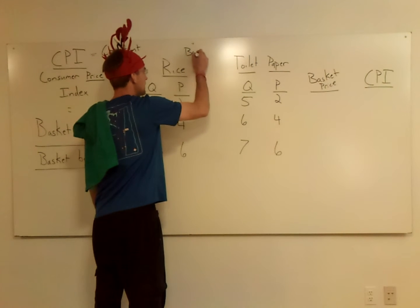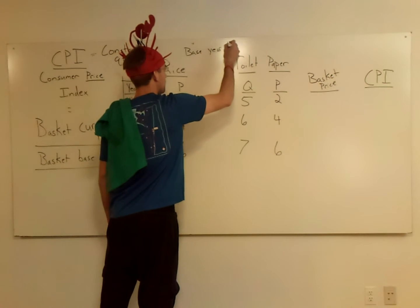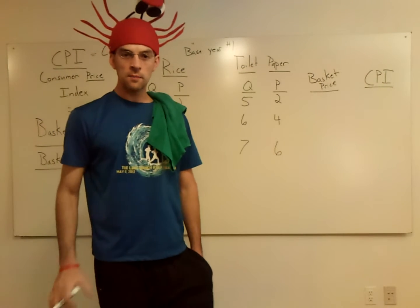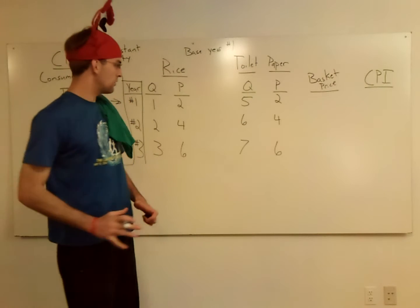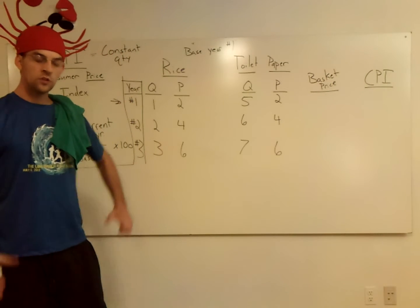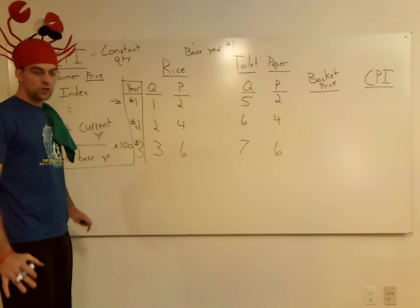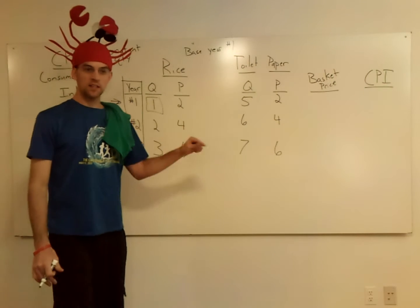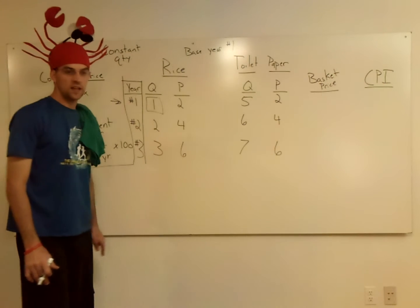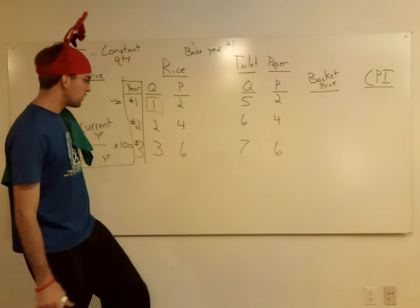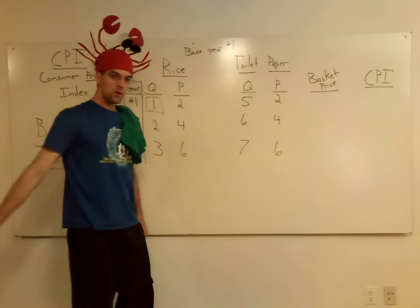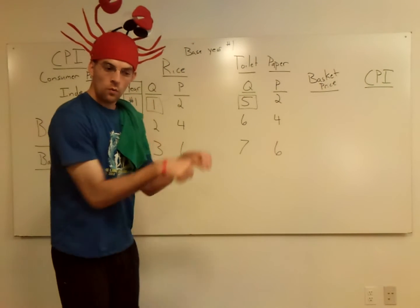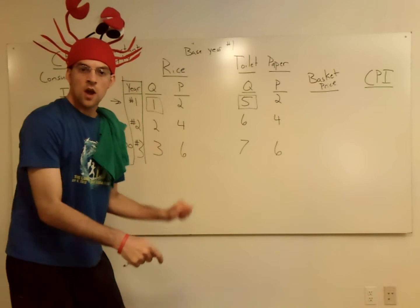I need to give you a base year to figure that out — we are going to use base year number one. So this right here is going to be our base year. The quantity of rice we will use will be one, and the quantity of toilet paper we are going to use is going to be five. This is said to be our market basket — what we have in our basket. We are always going to have five things of toilet paper and one thing of rice.